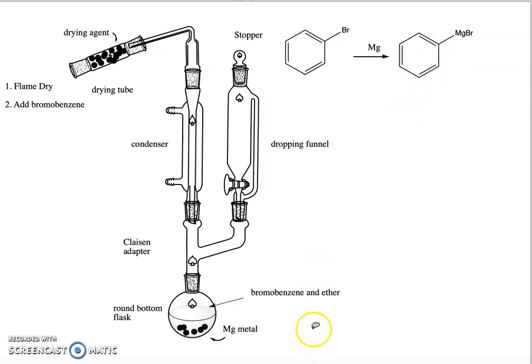If everything's dry, it will start reacting to make our Grignard reagent and this will give off heat. It'll give off enough heat so that the ether will actually start to boil on its own and you'll start to see drops of ether forming on the reflux condenser and dripping back down into our flask.